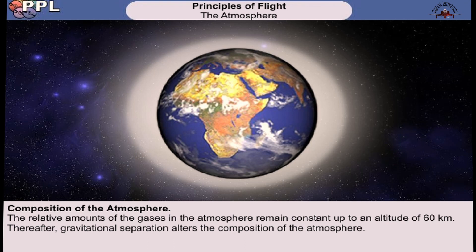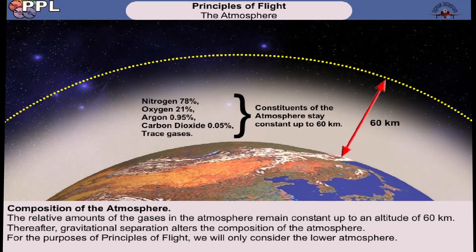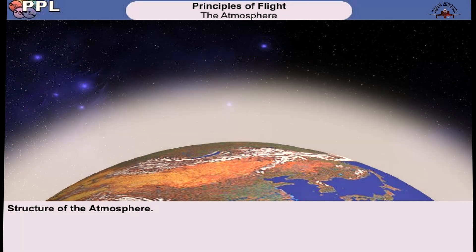The relative amounts of the gases in the atmosphere stay fairly constant up to about 60 kilometers above the earth. Thereafter, gravitational separation alters the composition of the atmosphere. For the purposes of the principles of flight, we only consider the lower parts of the atmosphere, so we may assume the constituents remain constant.